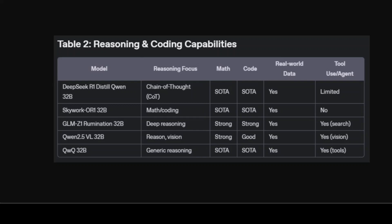A new model, GLM Z1 Rumination, which just arrived last week, adds rumination — multi-step deep thought prompting with research-style retrieval and complex task solving. If you have a very complex coding or math problem, I would highly suggest giving GLM Z1 a try. Qwen 2.5 VL brings strong reasoning and coding with a tilt toward vision challenges and tool-using agent scenarios, making it a very good choice for problems embedded in tables or equations.